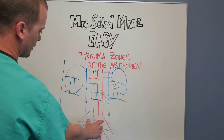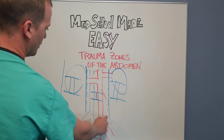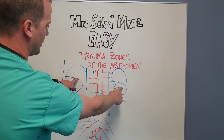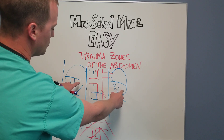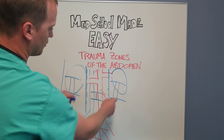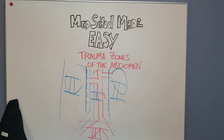So you have zone one in the midline down to the sacral promontory, you have two zone twos out laterally which basically involves the kidneys and the associated retroperitoneum, and you have zone three which is the pelvis. Those are the vascular trauma zones of the abdomen and pelvis that people will talk about.